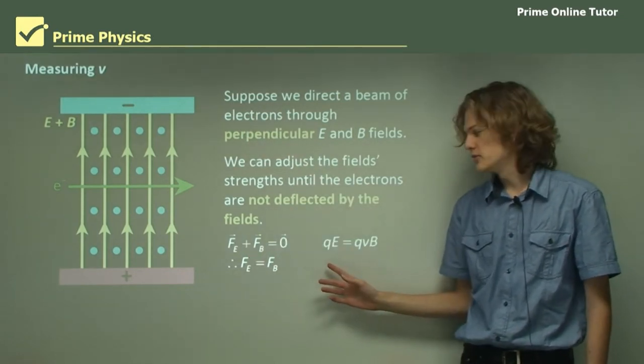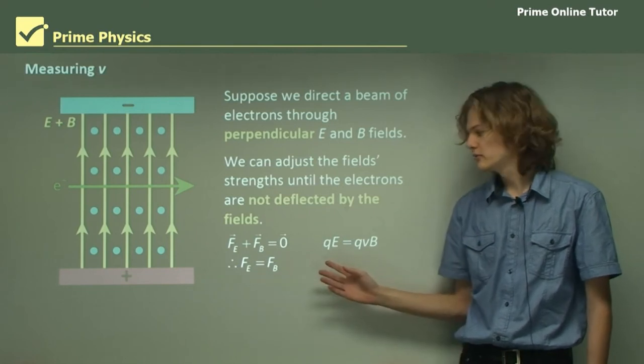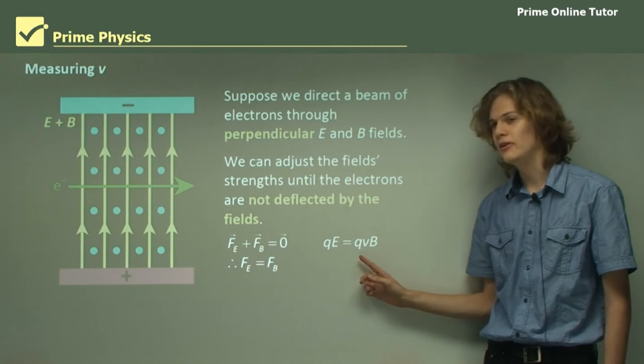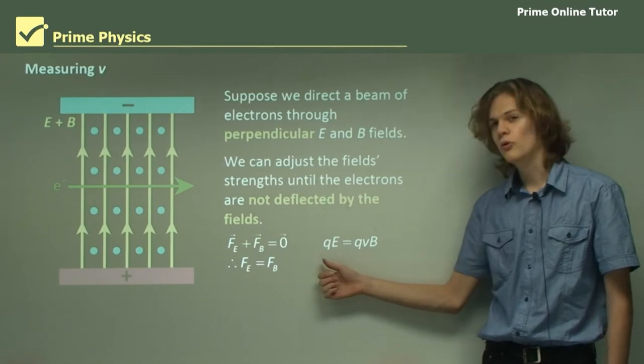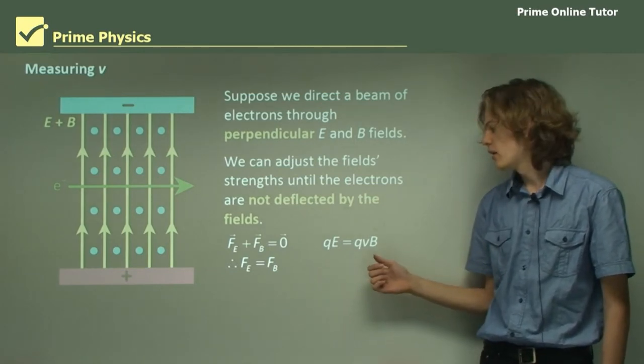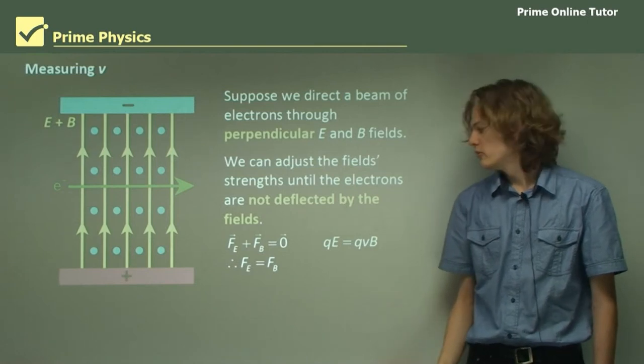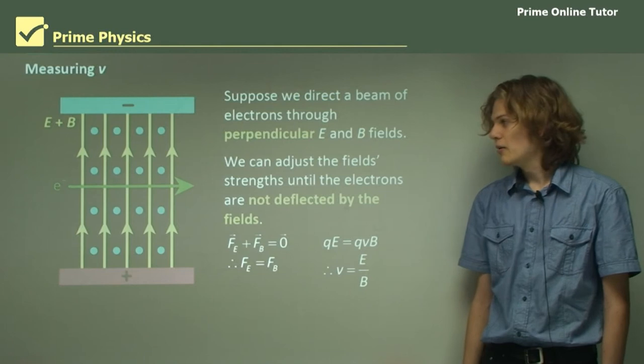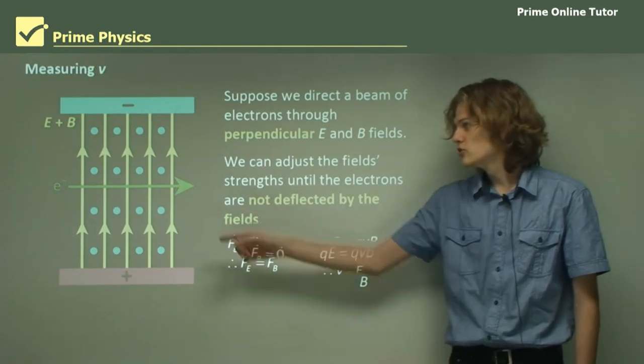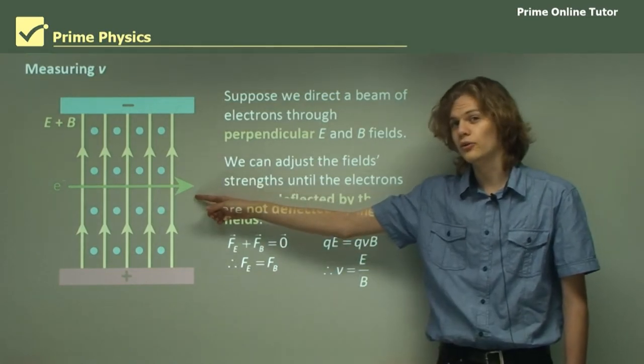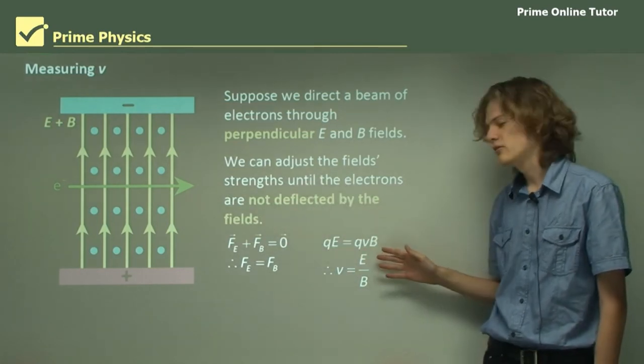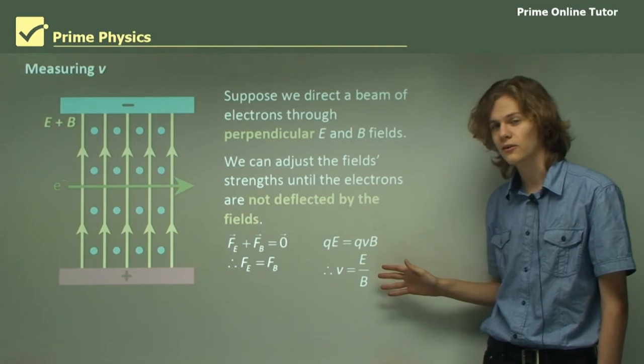Algebraically, we can write that the sum of the forces is zero, and this means that the magnitude of the forces must be equal, one in one direction and one in the other. Substituting the expressions for the forces from each field, we have qE equals qVb. Dividing through by q and then by b, we end up with the expression v equals E on b.